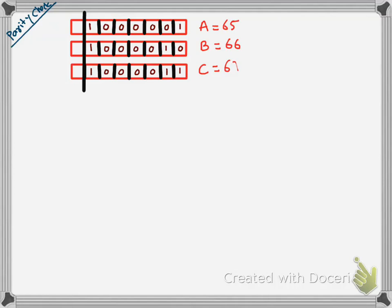In parity, there are two types: even parity and odd parity. When two computers communicate, they first decide whether they will use even or odd parity. Most systems in the world run even parity. We'll take all examples with even parity and solve two past paper questions — one with odd parity and one with even.